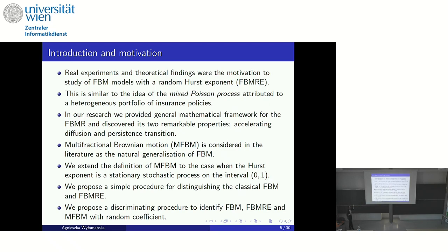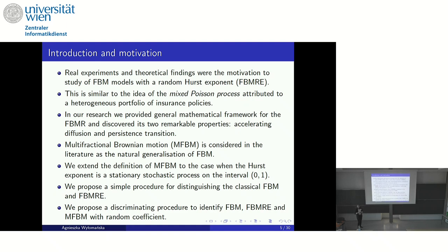The idea of a process with a random parameter is not new. In insurance, we know the mixed Poisson process — the same idea, where the counting process parameter is a random variable, and this process has different properties than the classical process. In our research, we first analyzed this kind of process — fractional Brownian motion with random exponent. Our analysis shows two important properties not visible for standard fractional Brownian motion.